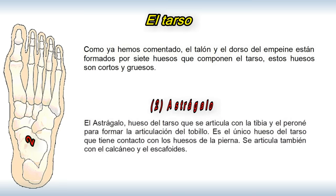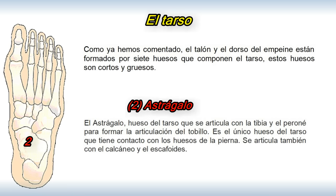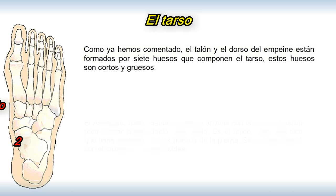El astrágalo, hueso del tarso que se articula con la tibia y el peroné para formar la articulación del tobillo. Es el único hueso del tarso que tiene contacto con los huesos de la pierna. Se articula también con el calcáneo y el escafoides.